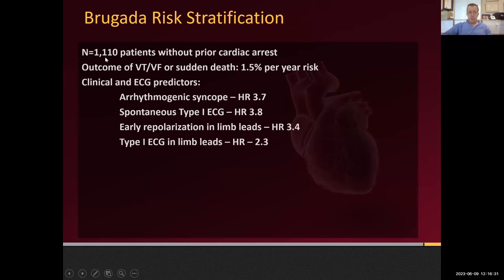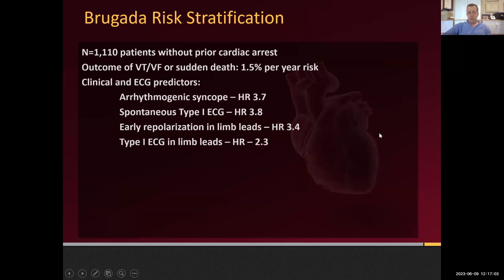Looking at ECG-lab outcome data: the overall risk of sudden death is about 1.5% per year — very low. But if you had a history of syncope or a spontaneous Type 1 pattern, the risk was fourfold increased. If you had repolarization changes not just in V1/V2 but also in the inferior leads, that was a 3.5-times risk. A Type 1 pattern in the inferior leads adds an additional twofold risk. So the more broadly you see ST elevation, the more risk there is.